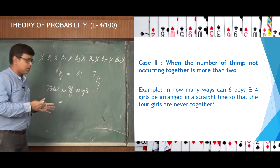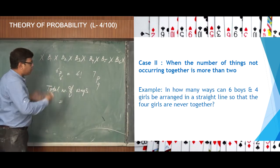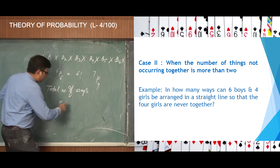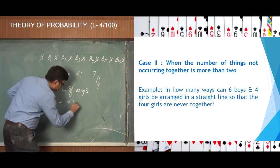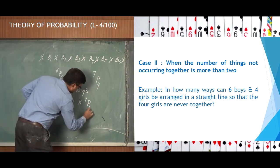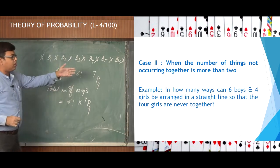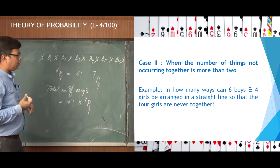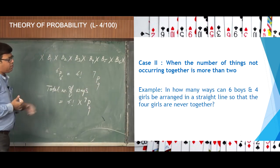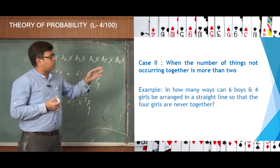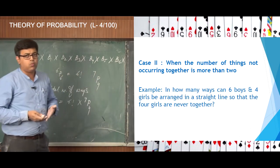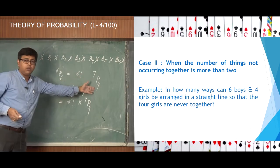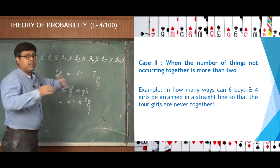Therefore, the total number of ways to satisfy this arrangement equals — by the fundamental principle, the product rule — 6 factorial into 7P4, because both things are occurring simultaneously. So 6 factorial into 7P4 gives the answer to this particular question. This is the type of question where the number of things not occurring together is more than 2 — in this case, four girls were never together.